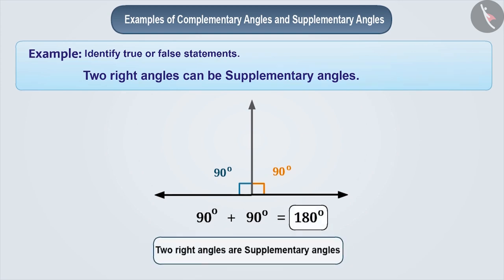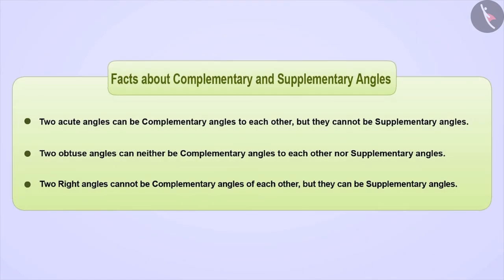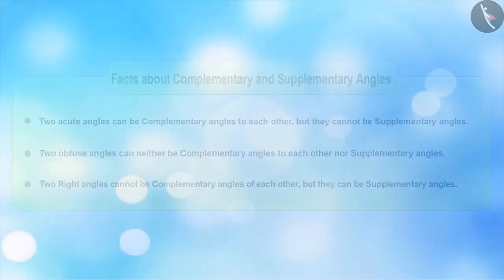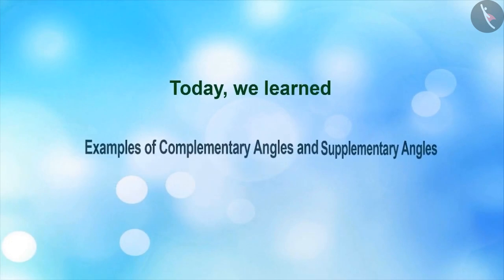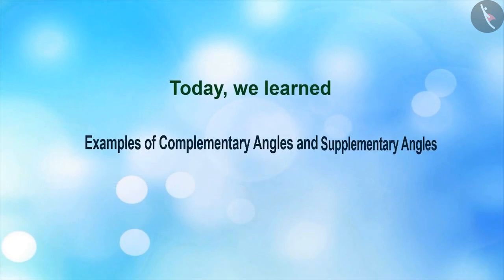By identifying the correct and incorrect statements, we now know that two acute angles can be complementary angles of each other, but they cannot be supplementary angles. Two obtuse angles can neither be complementary nor supplementary angles of each other. And two right angles cannot be complementary angles of each other, but they can be supplementary angles. Today, we have seen examples of complementary angles and supplementary angles.